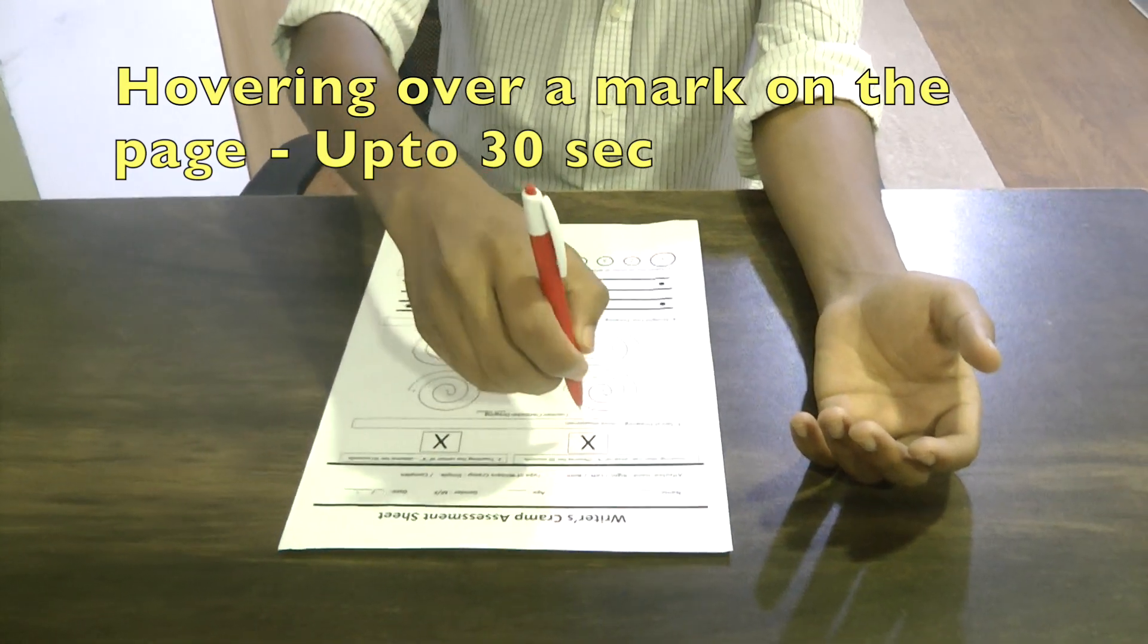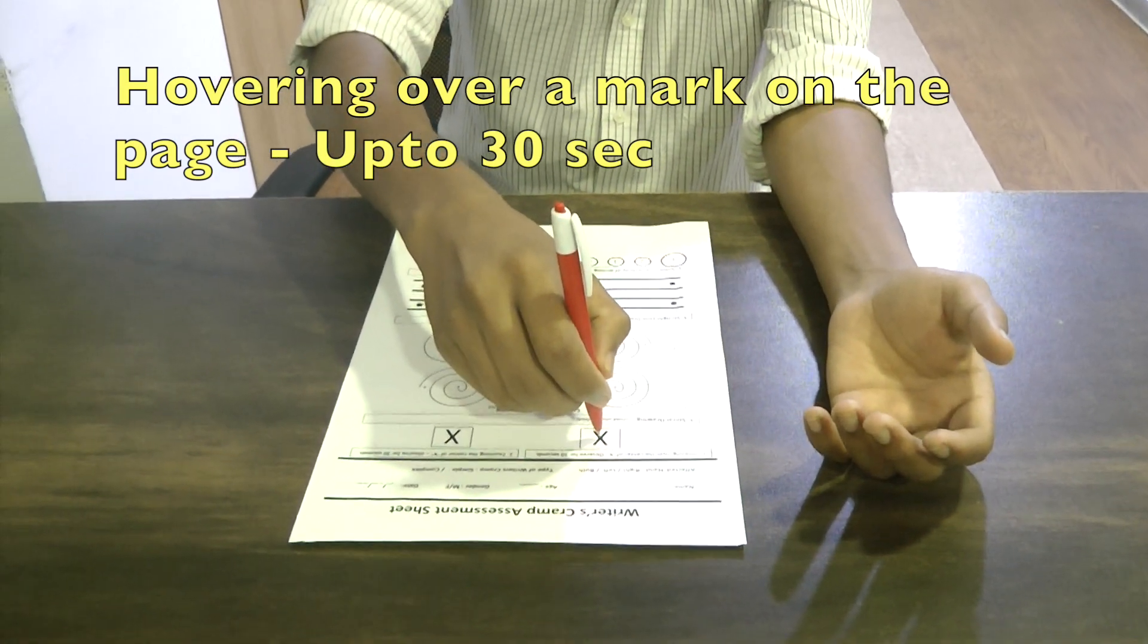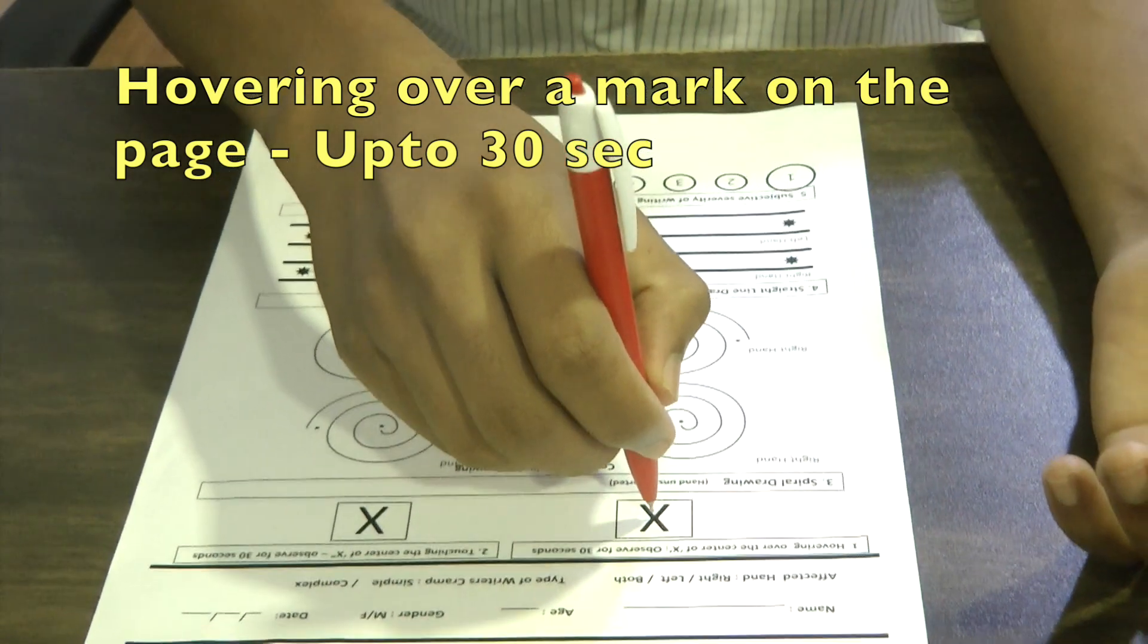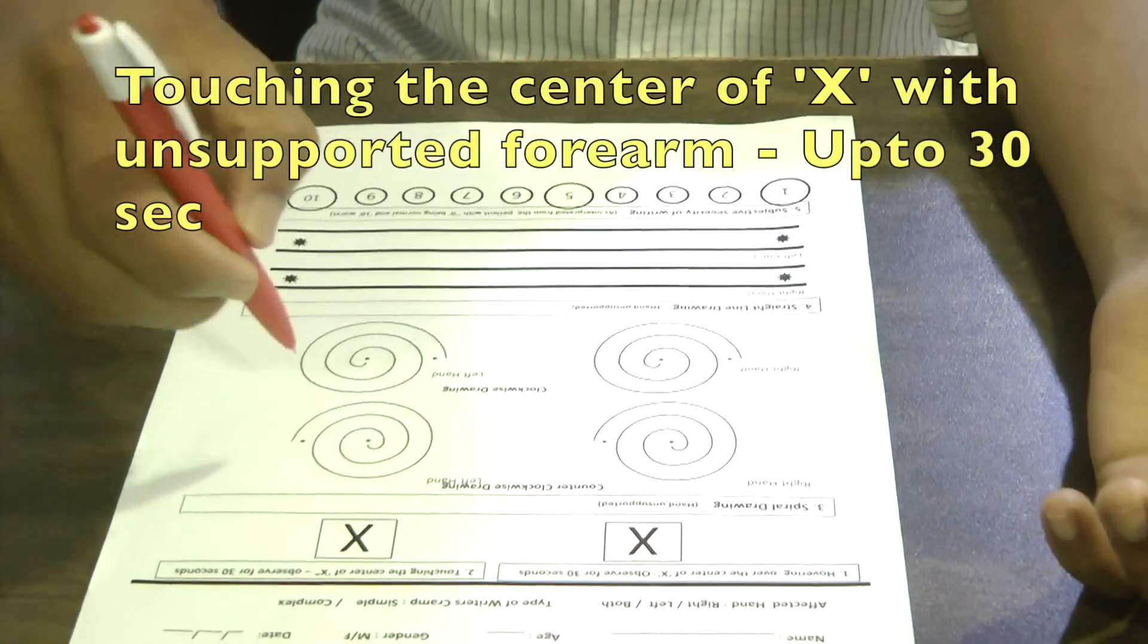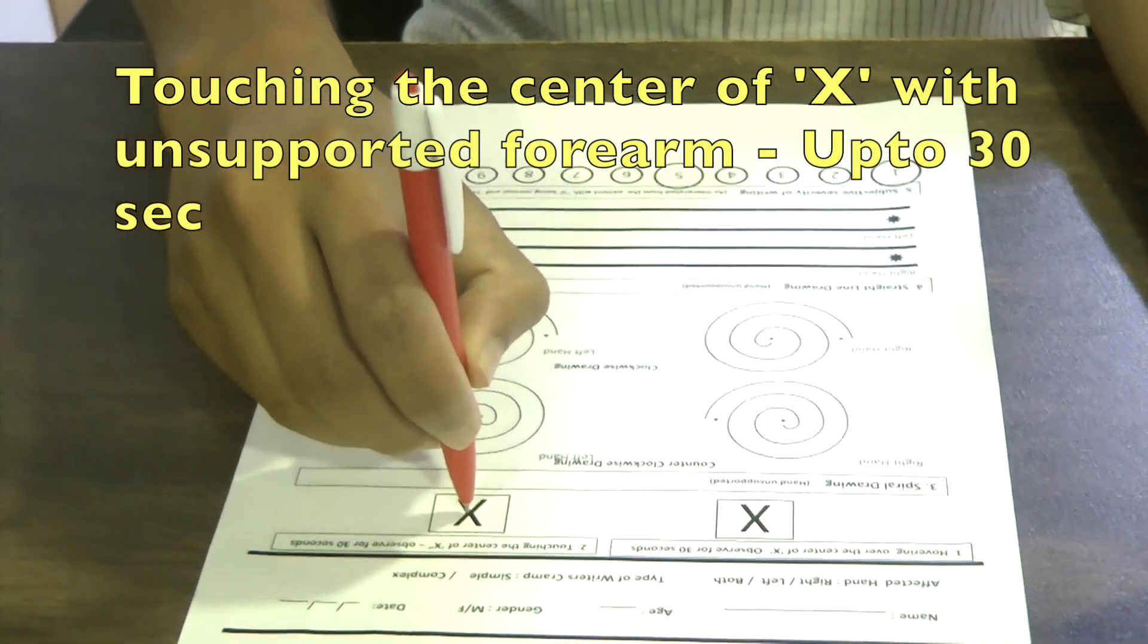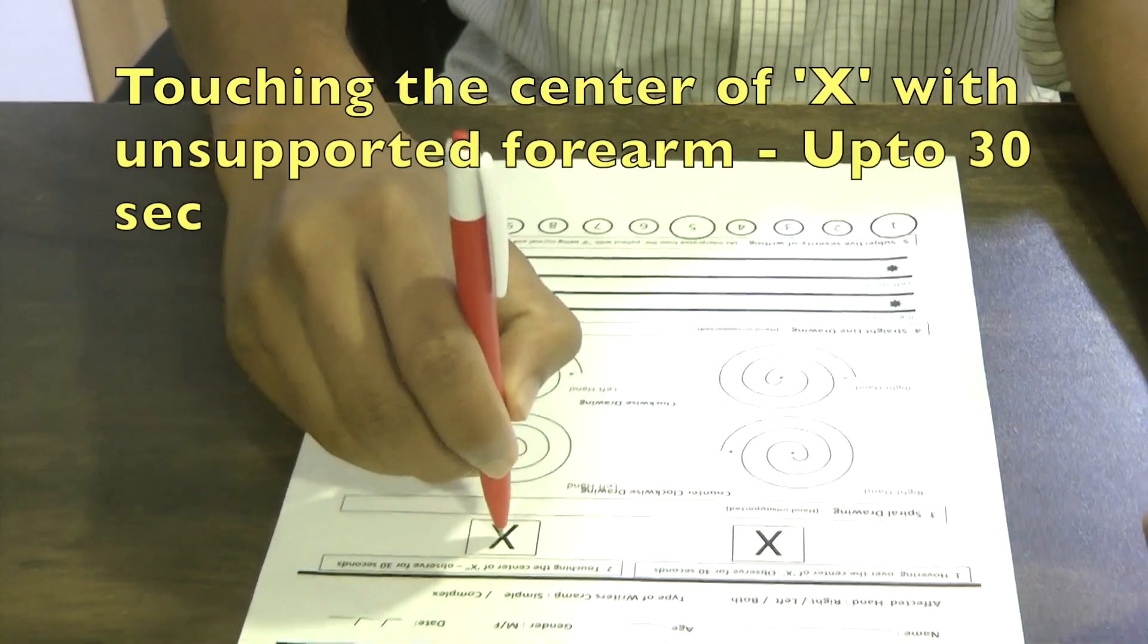After the standard neurological examination, the assessment of writer's cramp specifically would begin with asking the patient to hover over a mark on the page and to look for any spontaneous contractions. The same observation with touching the center of the X is further done. The observation should be done up to 30 seconds.